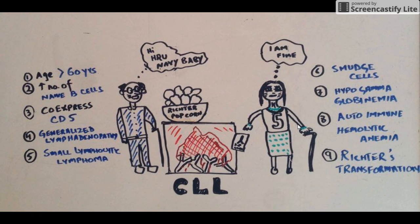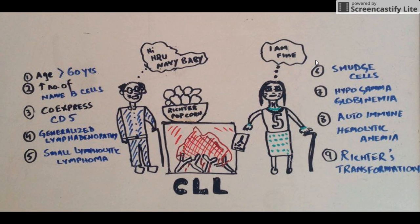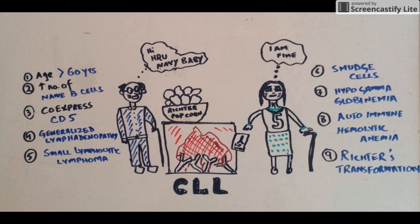How do you differentiate between normal lymphocytes and the lymphocytes of CLL, since they are normally-looking lymphocytes? The important feature on the peripheral blood smear is smudge cells. Smudge cells are ruptured lymphocytes — because they are not normal, they rupture easily. In the mnemonic, this is shown by the smudged eye makeup of the old lady — her messy eyes represent smudge cells on the peripheral blood smear.